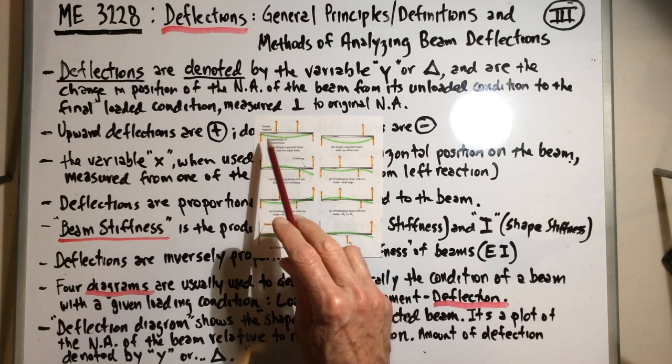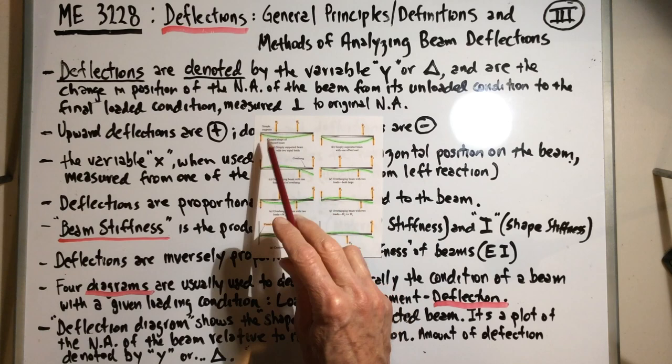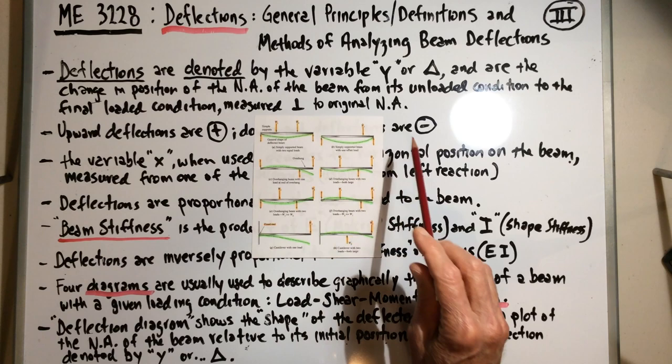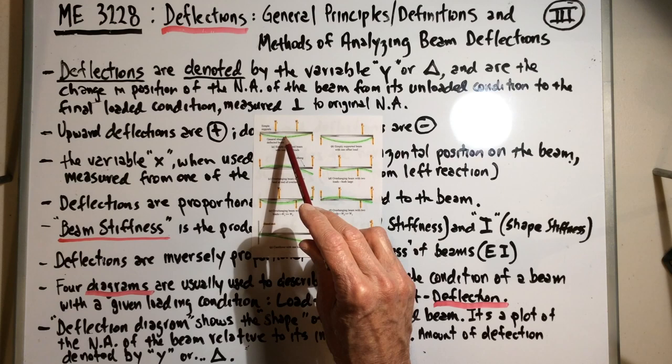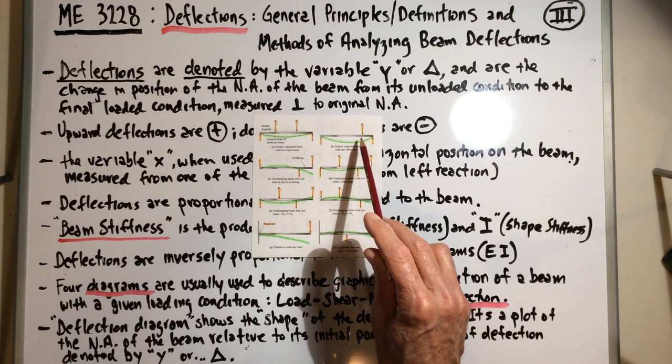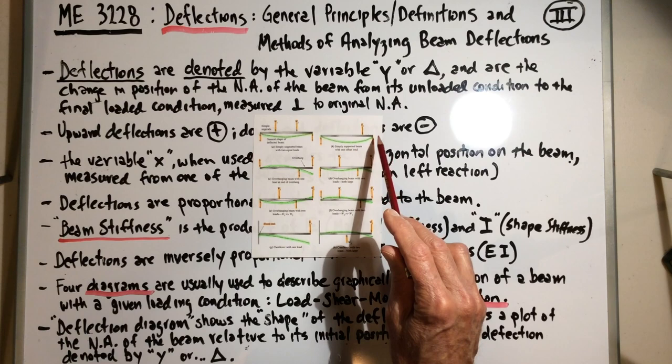I've highlighted the loads and reactions in orange. This is a simply supported beam with two equal loads applied. In green I've shown the actual deflection curve — no surprise, it's obviously negative, and y-max would be dead center at mid-span. The second case is similar but with a concentrated load shifted toward the right, so the y-max shifts slightly to the right as well.